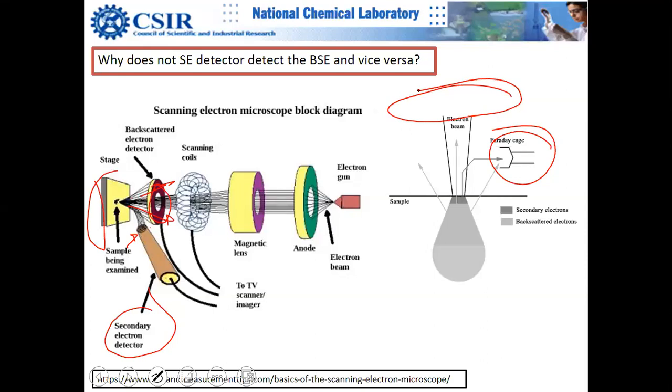With the backscattered detector you are purely looking for Z contrast — chemistry information — you don't want anything else.